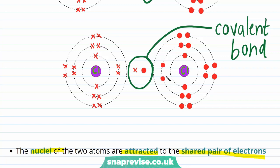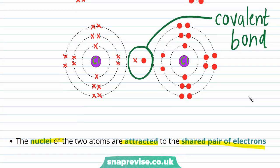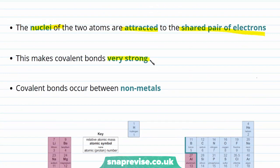This covalent bond is held in place because the nuclei of the two atoms are attracted to the shared pair of electrons. This is because the nuclei have a positive charge and the shared pair of electrons a negative charge. This strong attraction makes covalent bonds very strong.